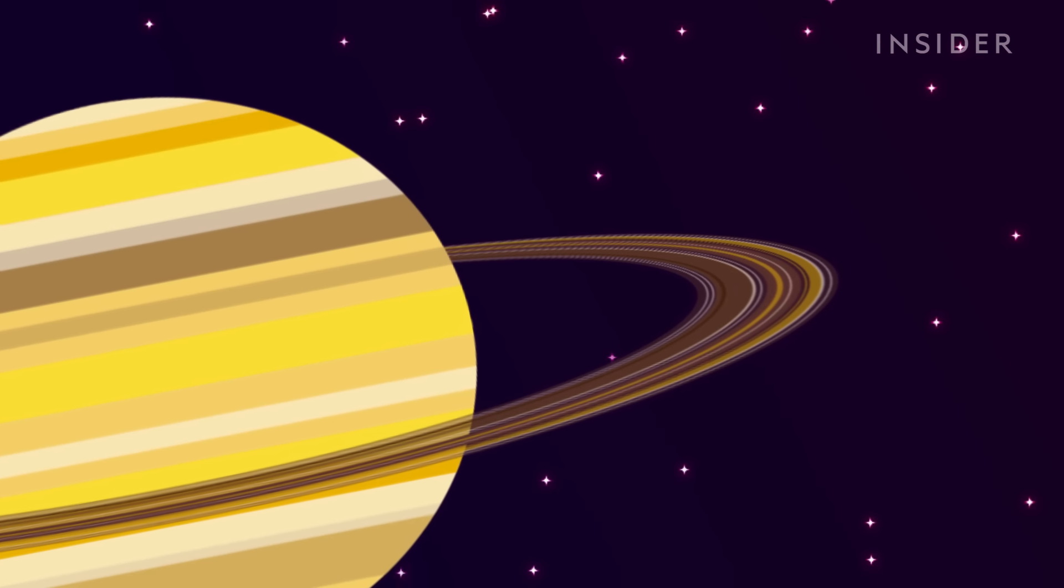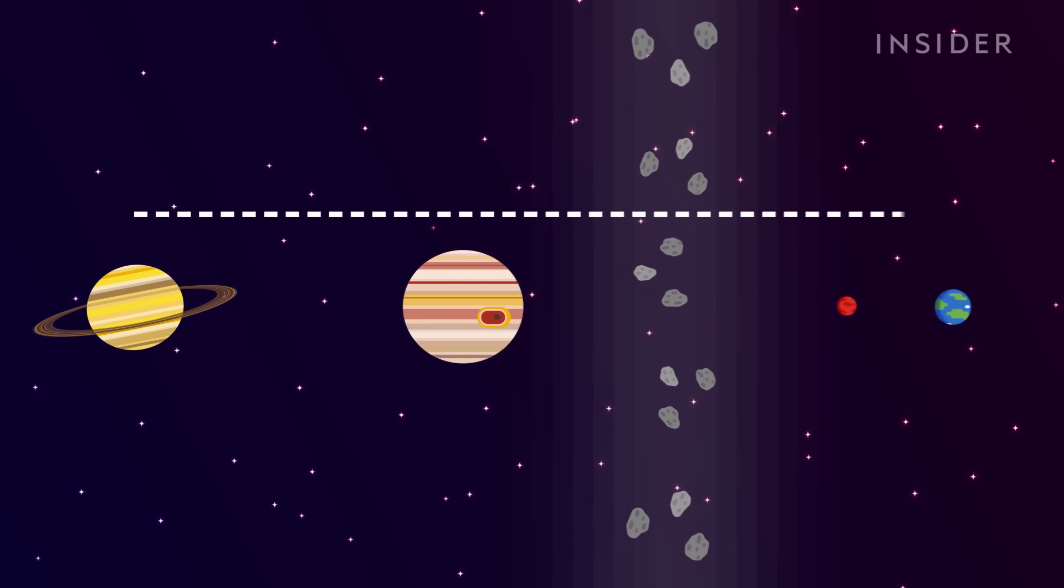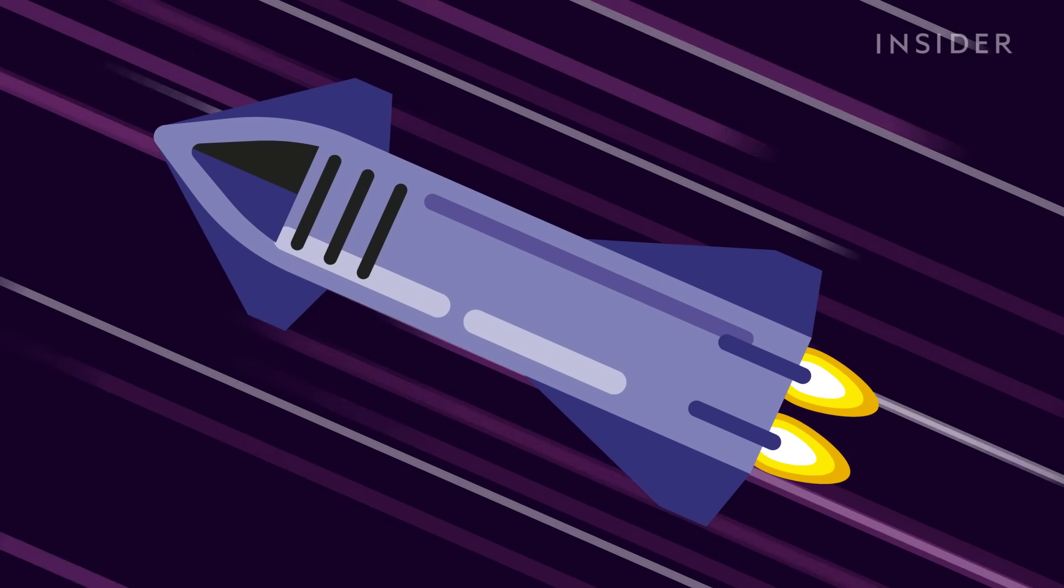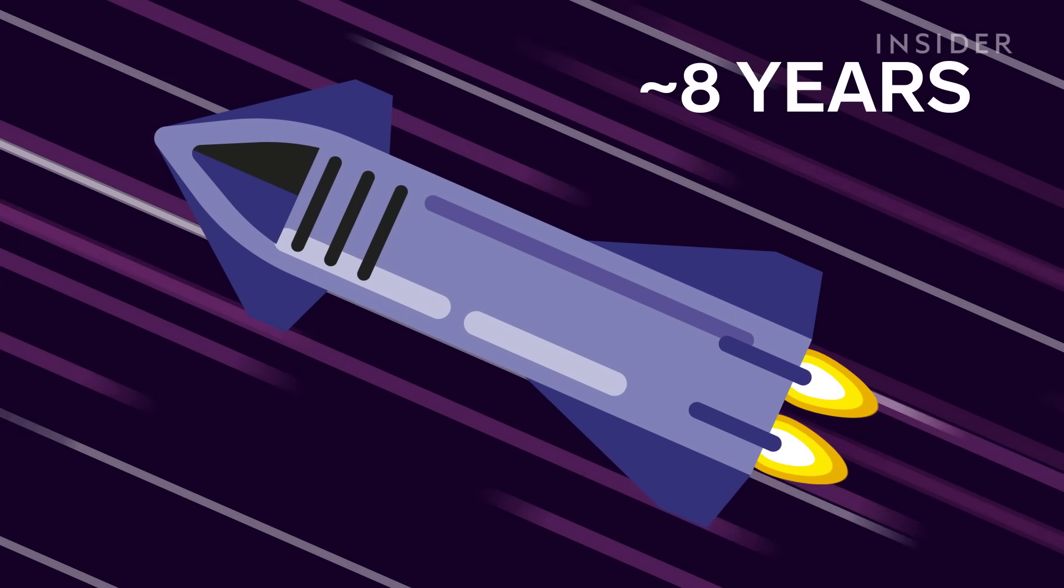At its closest, Saturn is 1.2 billion kilometers away from Earth. So with today's spacecraft technology, you'll need about eight years to make the trip.